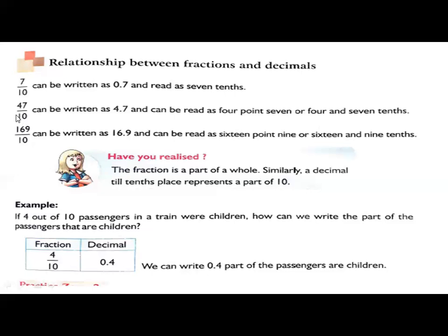Next, 169 by 10. 169 by 10 can be written as 16.9 because by 10, so 10th position, we write a decimal point from the right side. So 169 becomes 16.9. So we read as 16.9 or 16 and 9 tenths.